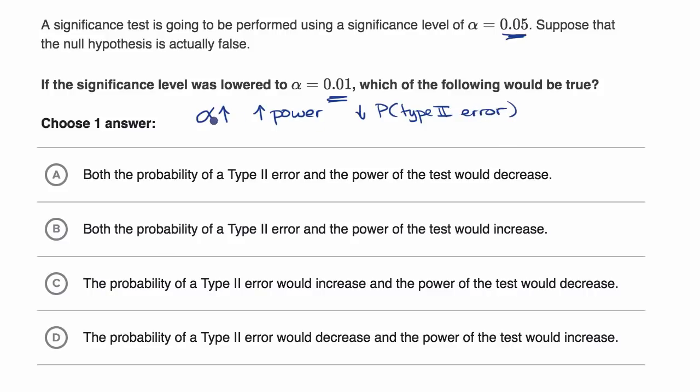But in this question, we're going the other way. We're decreasing the level of significance, which would lower the probability of making a type one error, but this would decrease the power. It actually would increase the probability of making a type two error.